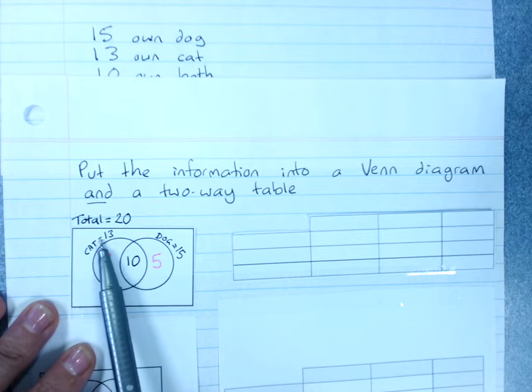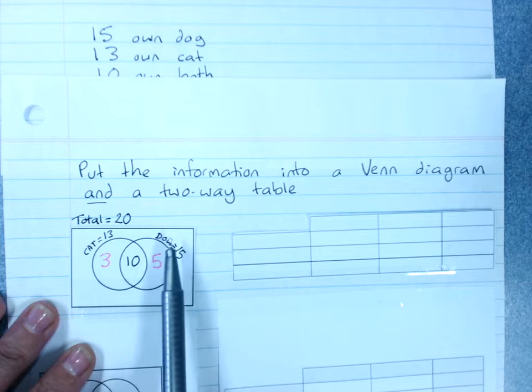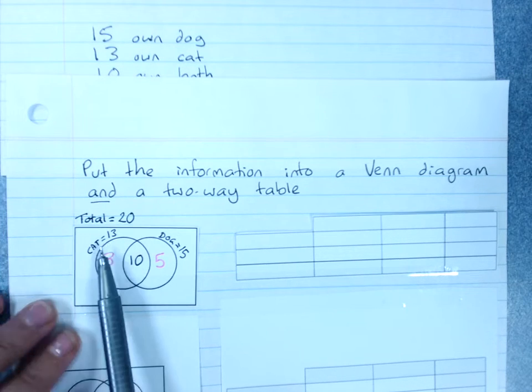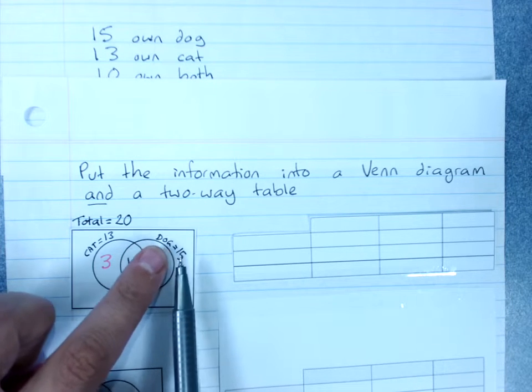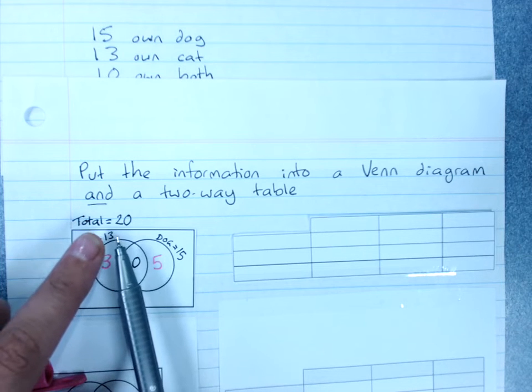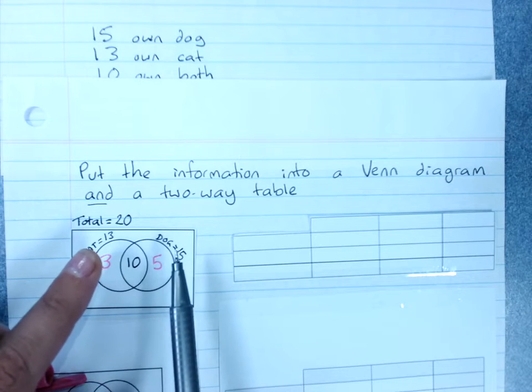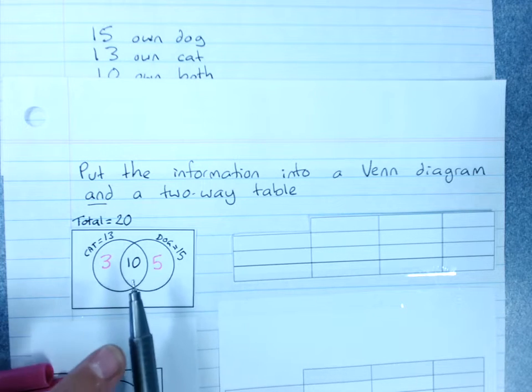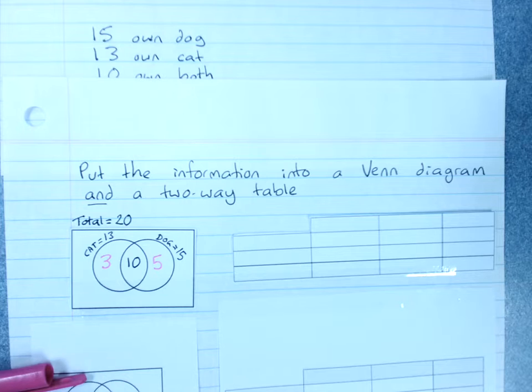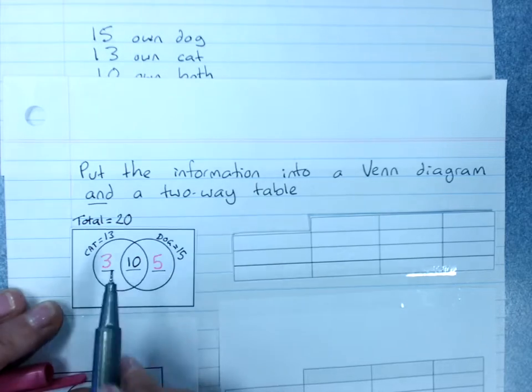Now, we never want to count the thirteen and the fifteen, the total of the circles, when we're trying to add up everybody. Because if I counted these thirteen people and these fifteen people, I would count those ten twice. You think about it. When I said, do you own a dog? Fifteen people put their hand up. When I said, do you own a cat? Thirteen people put their hand up. When I said, do you own both, everyone had already put their hand up. Ten people put their hand up, but they'd already put their hand up before. They'd already been counted.